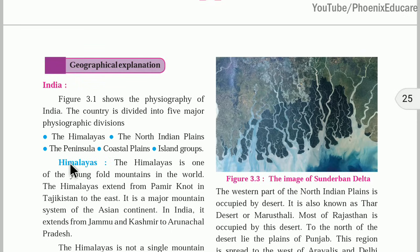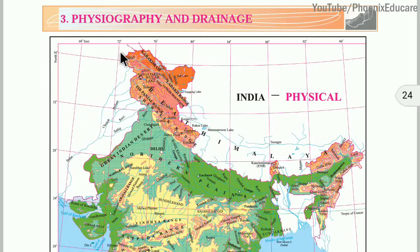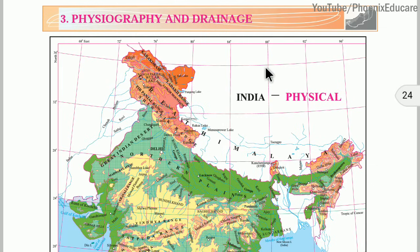The Himalayas is one of the young fold mountains in the world. The Himalayas extend from the Pamir Knot in Tajikistan to the east, forming an arc from Jammu Kashmir to Arunachal Pradesh. The Himalayas are fixed at two ends: the Pamir Knot in Tajikistan and Namcha Barwa in the east, acting like a pin holding the arc of the Himalayas in place.